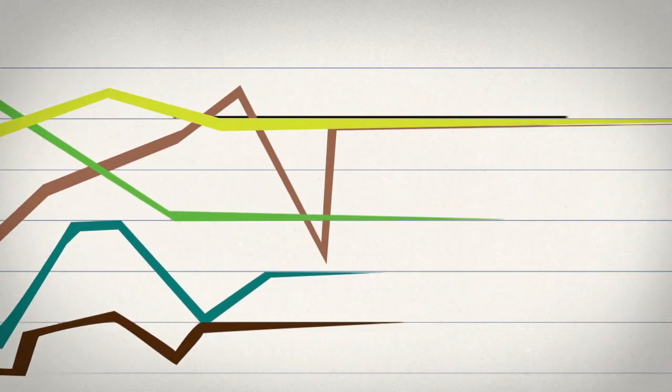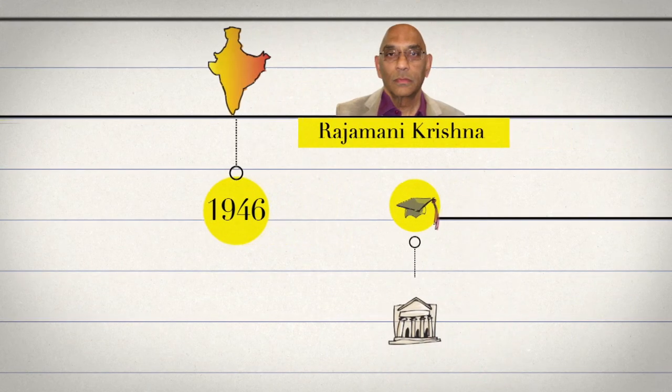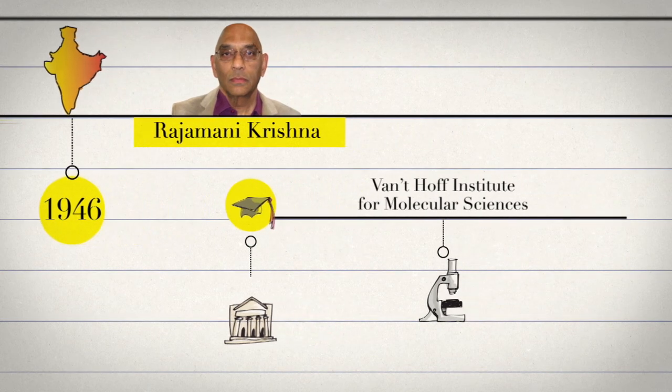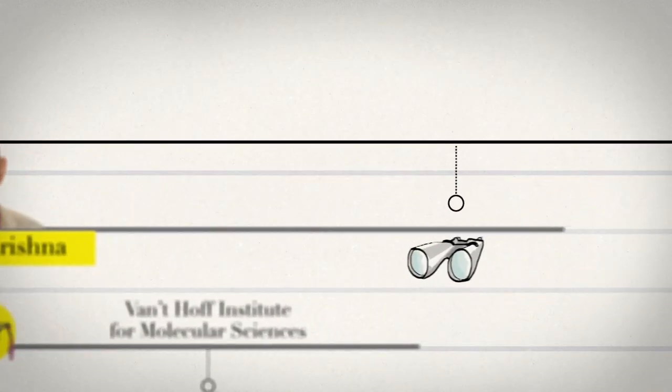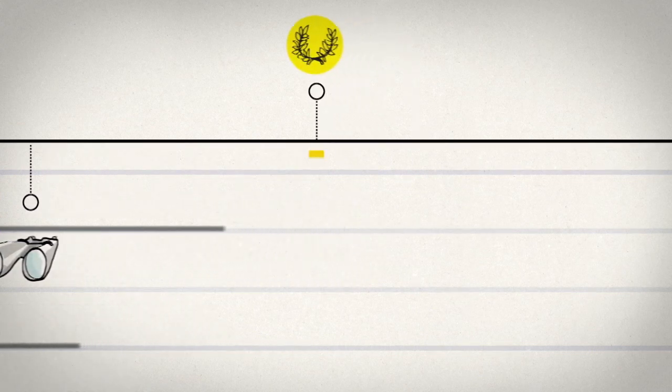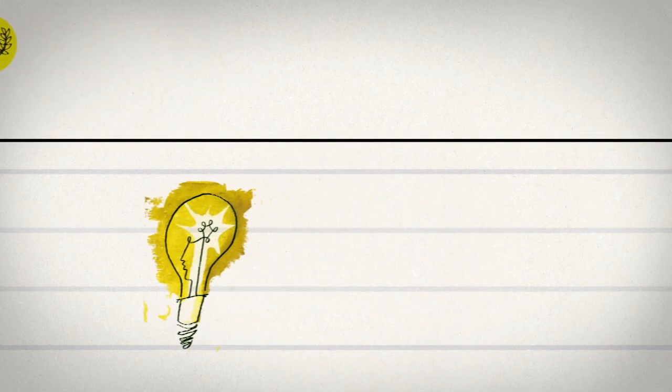Rajmani Krishna, born in Mumbai in 1946, a professor at the University of Amsterdam and prominent scientist at the Van't Hoff Institute for Molecular Sciences, has focused his attention on resolving the very problem posed by these activities. He is the winner of the 2013 ENI Award New Frontiers of Hydrocarbons in the downstream section.